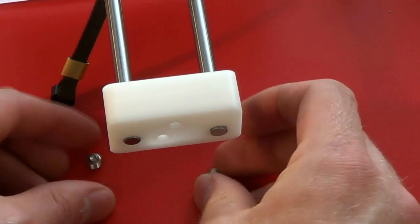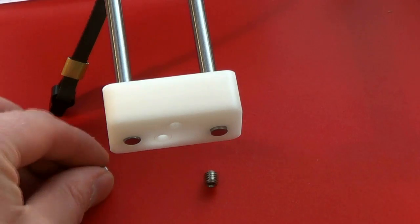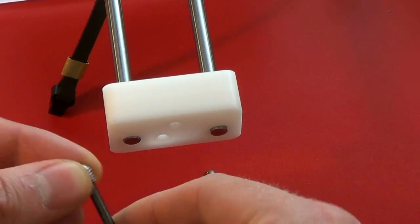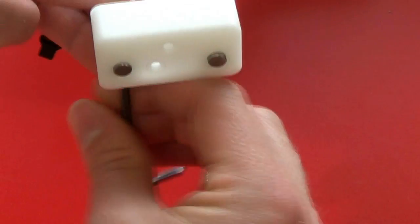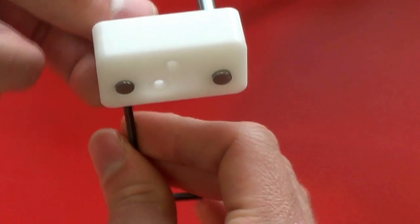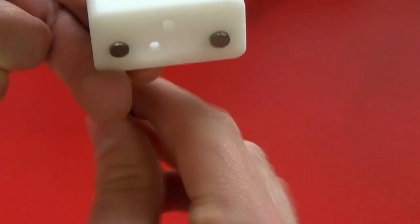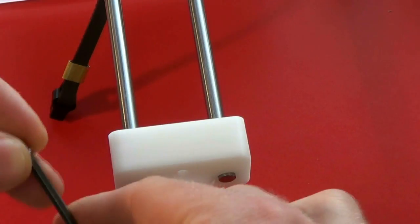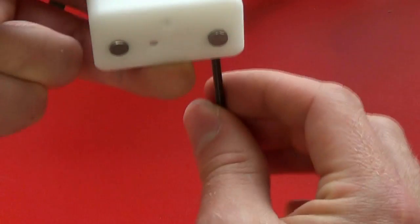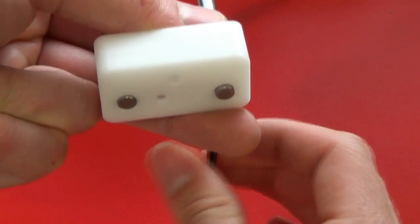Again, take the two M6 grub screws and the Allen key and tighten the rails into place. You don't have to turn the machine over, but it helps to do so.